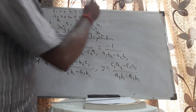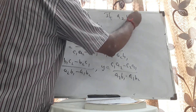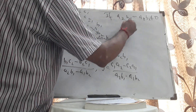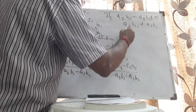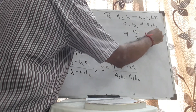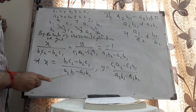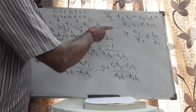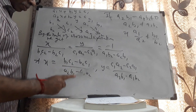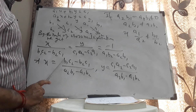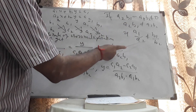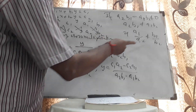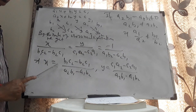Now, if the denominator (A2·B1 minus A1·B2) is not equal to zero — that is, A2·B1 is not equal to A1·B2, which automatically implies A1/A2 is not equal to B1/B2 — then I will get a unique value for x and a unique value for y. Therefore, the system has a unique solution when A1/A2 is not equal to B1/B2.